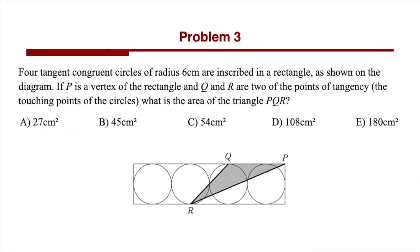For problem 3, there are four tangent congruent circles of radius 6 cm inscribed in a rectangle as shown in the diagram. P is a vertex of the rectangle, and Q and R are two points of tangency — the touching points of the circles. The question asks for the area of triangle PQR. Feel free to pause the video and try to solve this on your own.